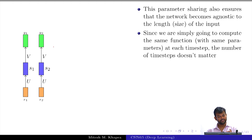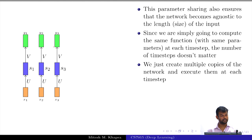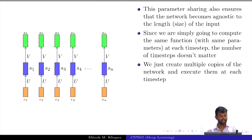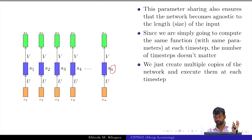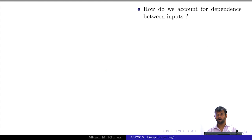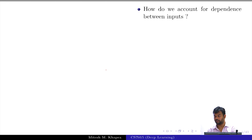Because at every time step I am going to execute the same function, the number of time steps does not matter. We can just create multiple copies of this network for any arbitrary length n and still compute the output. We still need to take care of more things, but we are slowly addressing each item from our wish list. Now, how do we account for dependence between inputs — that is, how do we account for the case that the output actually depends on multiple inputs and not just the current input?